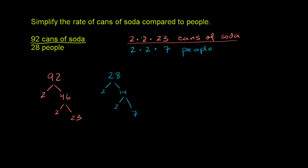Now, both of these numbers have a 2 times 2 in it, or they're both divisible by 4. That is their greatest common factor. So let's divide both the top number and the bottom number by 4.